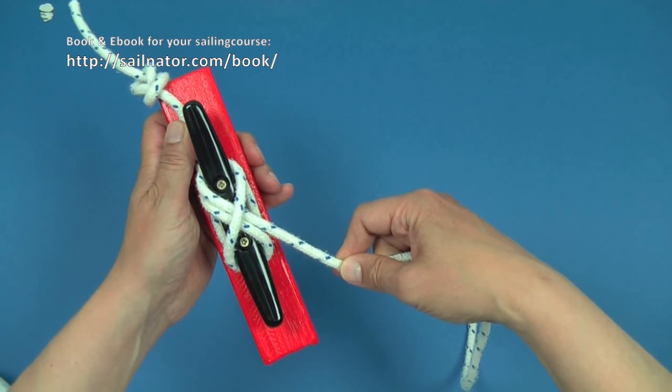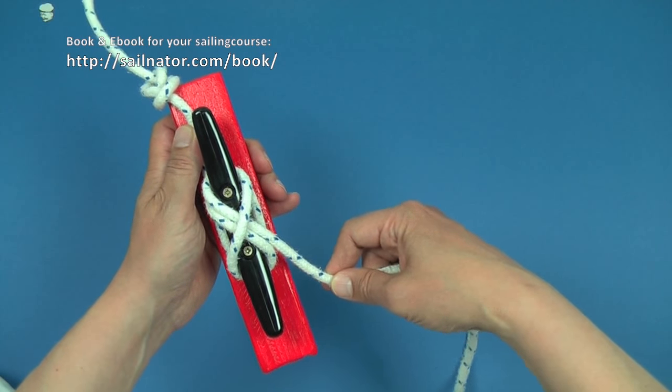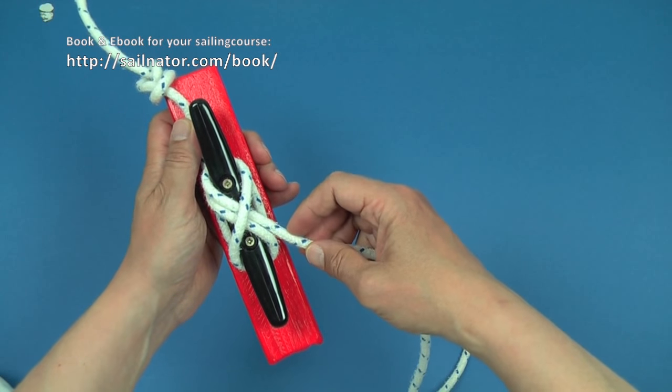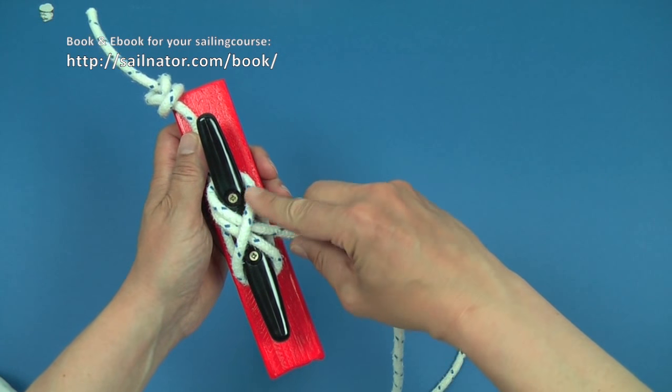The cleat knot is finished. We recognize the properly knotted cleat knot by these two parallel lying lines being crossed by a line.